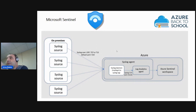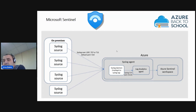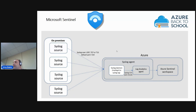For on-premises data, I have syslog as a standard protocol for different sources, over UDP, TCP, and TLS default port — for example port 514. I integrate via a syslog agent, syslog daemon, and Log Analytics agent with the Azure Sentinel workspace.